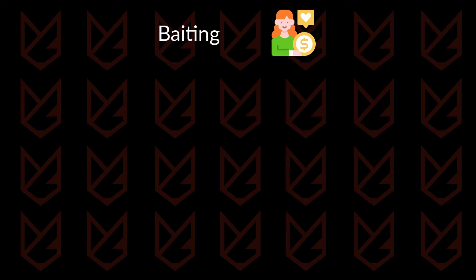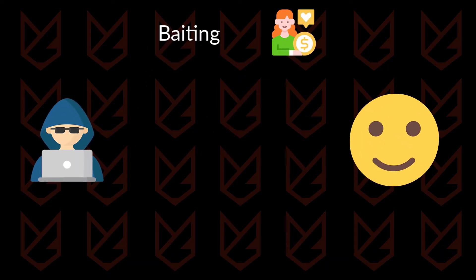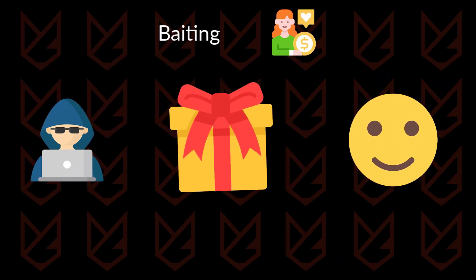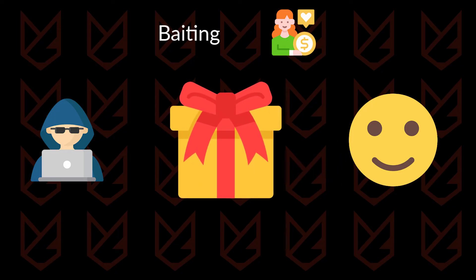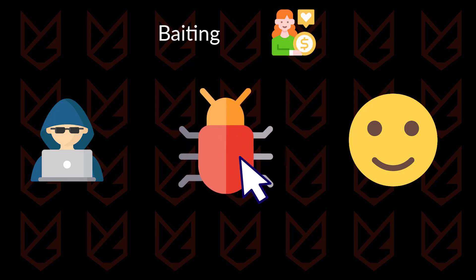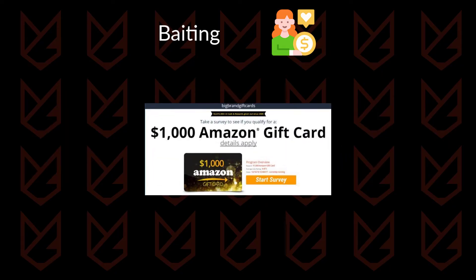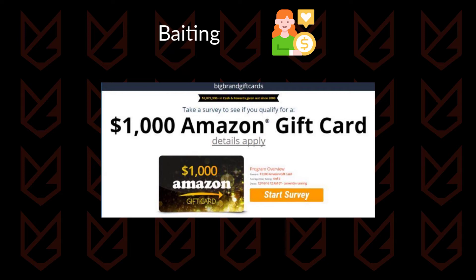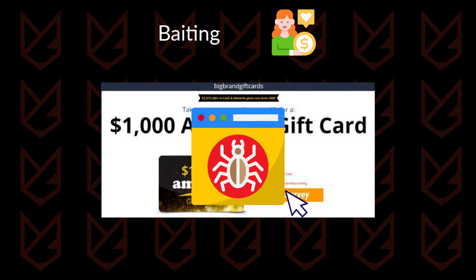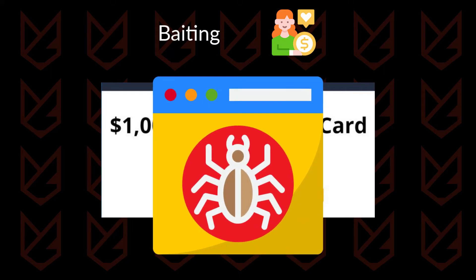Baiting is another popular social engineering trick. The attacker provides a fake offer as bait and takes advantage of the user's greed or curiosity. For example, many online ads offer free software or services to encourage users to click on them. Once clicked, either a malware-infected program would be downloaded into their system or they would be redirected to some malicious sites.